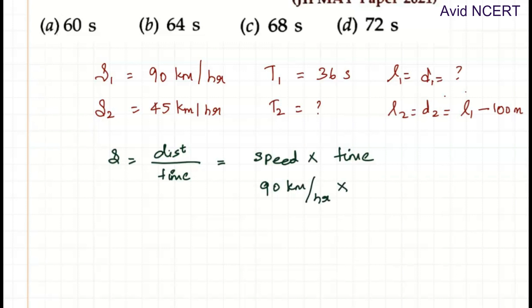So we convert km per hour to meters per second by multiplying by 5/18, then multiply by 36. Simplifying: 18 times 2 is 36, 5 times 2 is 10, and 10 times 90 is 900 meters. That is the length of the first train, D1 equals 900 meters.